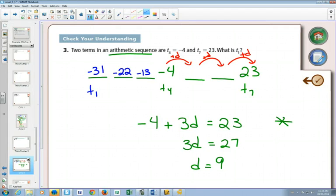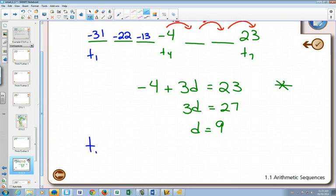So there, we can also find term one by going to our formula. Our formula says that term n is term one plus d times n minus 1.